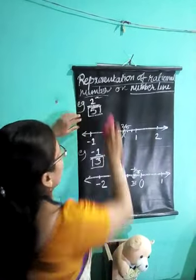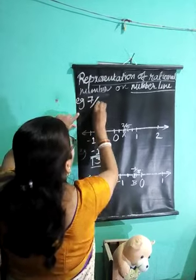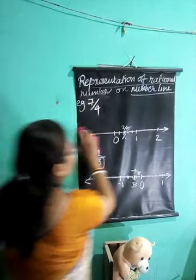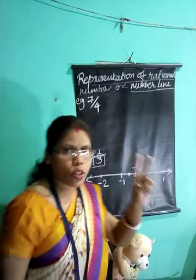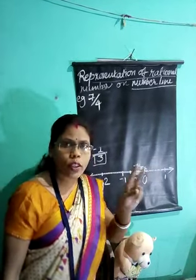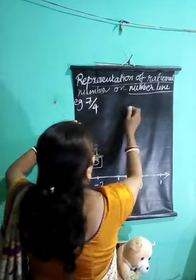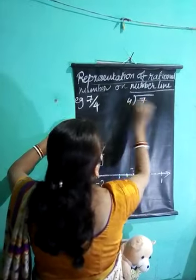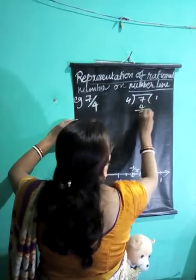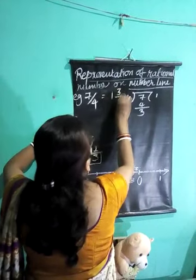Now let us take another example. The number is 7 by 4. Here you can see the numerator is greater than the denominator. In the previous one, 2 was the numerator and 5 was the denominator — 2 is smaller than the denominator. Now here 7 is greater than the denominator. In such a case, you need to first convert it into a mixed fraction. 7 by 4 gives 1 remainder 3, so it is 1 and 3 by 4.